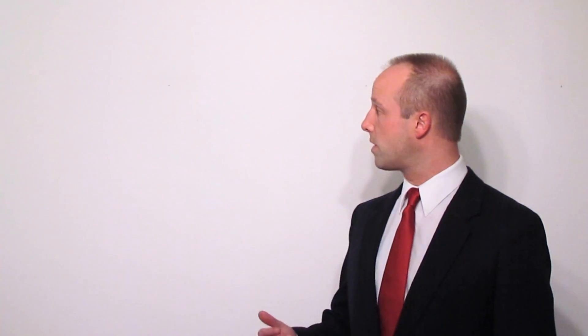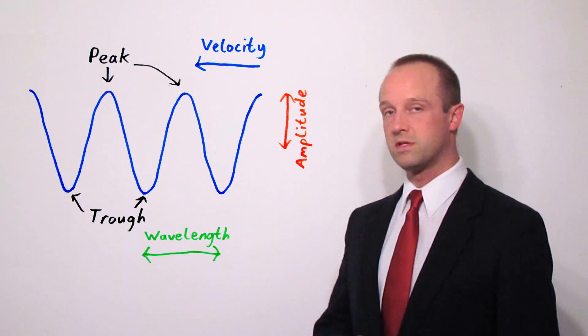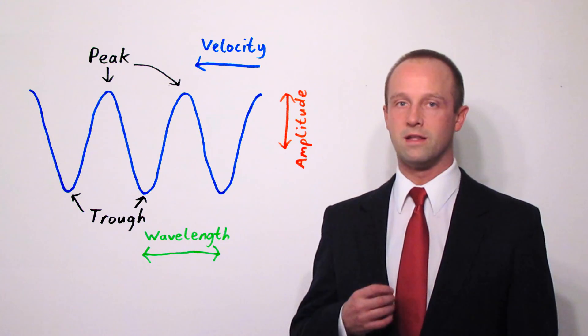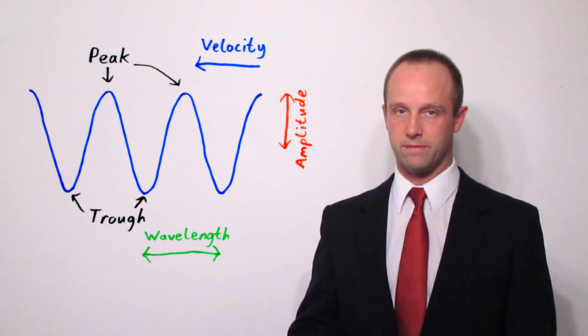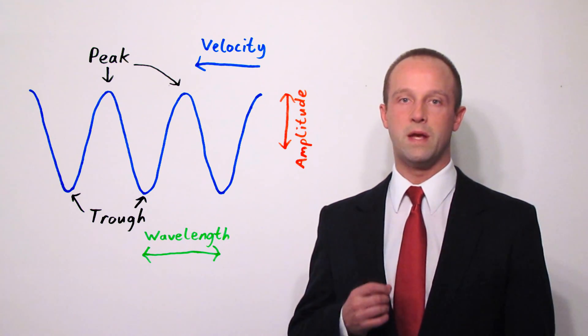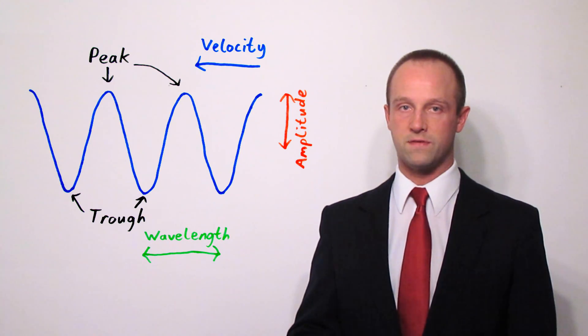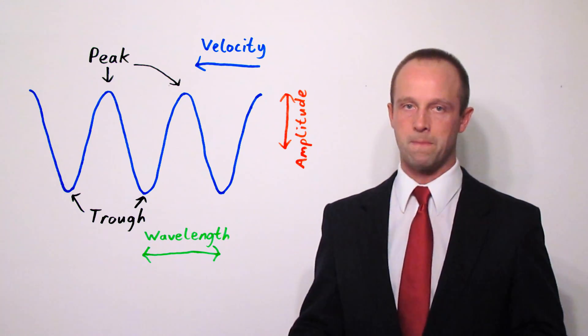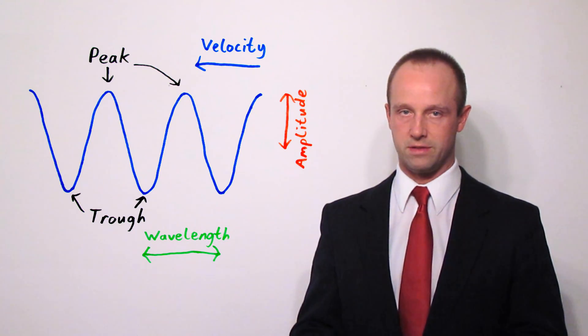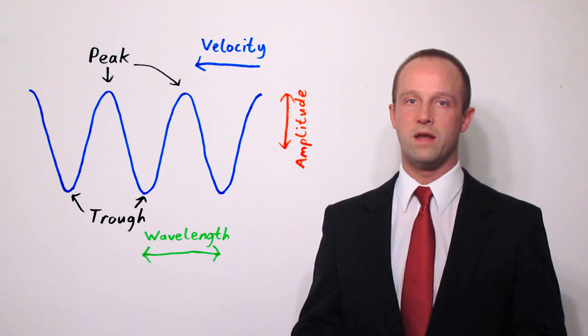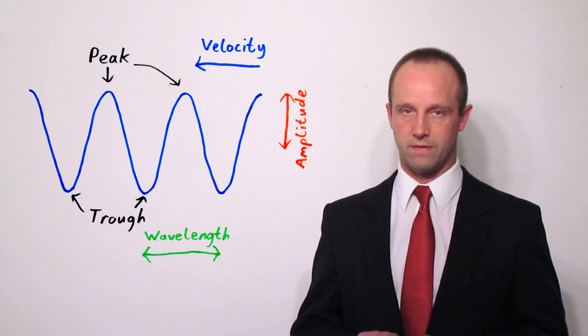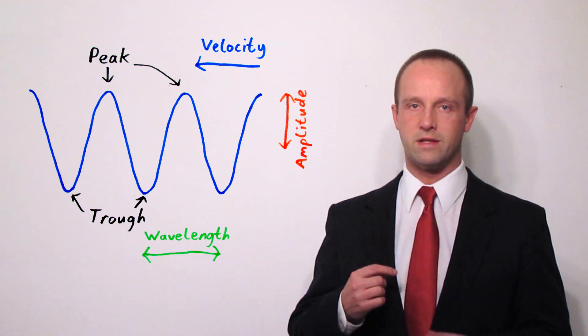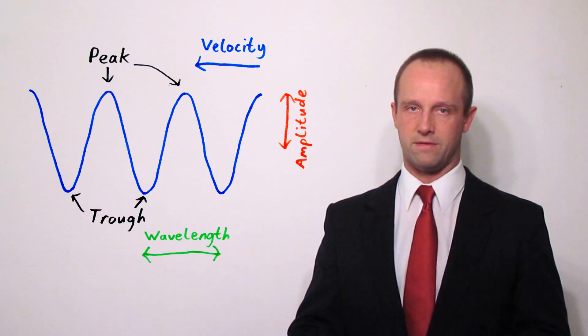A transverse wave will have what we call peaks and troughs. Those peaks and those troughs, they're the highest and the lowest points on the wave. Now the distance between two peaks or the distance between two troughs is known as the wavelength. It's simply the length of one wave and we'll normally measure that in meters. The height of the wave is known as the amplitude of the wave. Normally that's measured from the height of the peak to the depth of the trough and then halved.